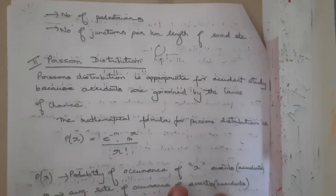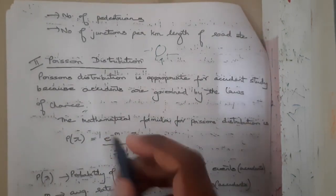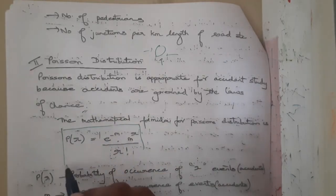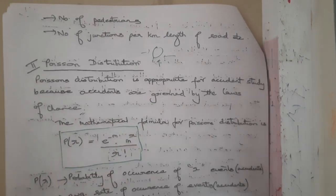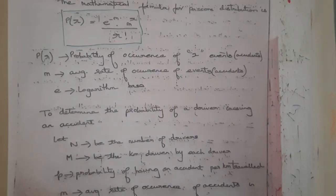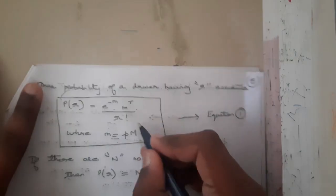Now let us continue with the Poisson distribution. Poisson distribution is approximated for accident study because accidents are governed by the law of chance. The formula is: P = e^(−m) × m^r / r!, which is the same formula discussed in the previous lecture. The only formula you should remember is this one.